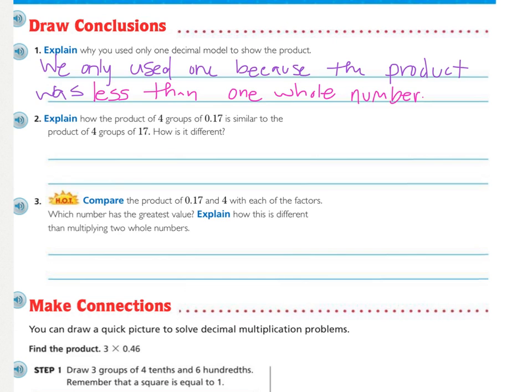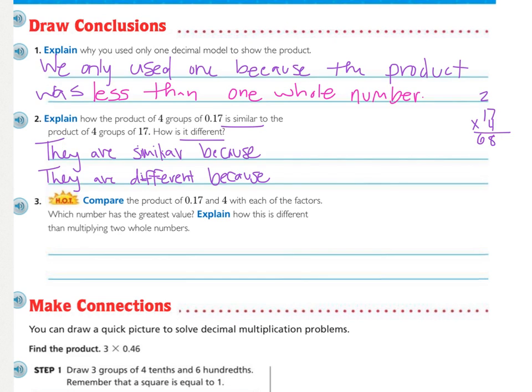Number two, explain how the product of four groups of 17 hundredths is similar to the product of four groups of just 17, and then how is it different. The first thing I would do is maybe show your multiplication of four times 17 so that you can see how they're similar. See if you can fill in these sentence frames.